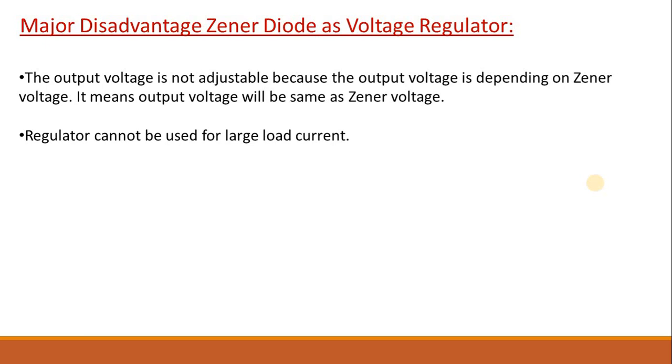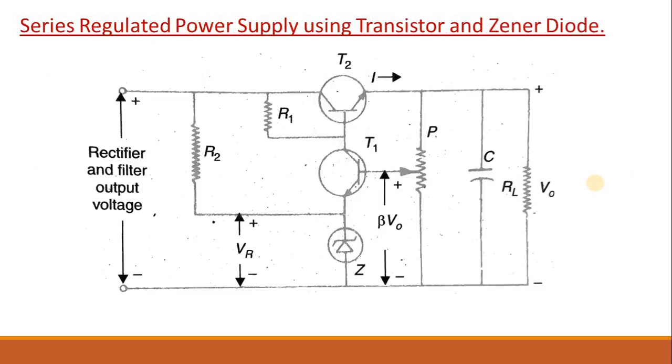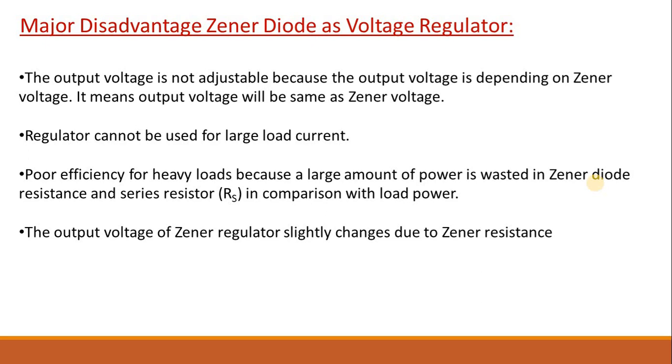Second, regulator cannot be used for large load current. If we increase the load current, then there is large amount of power wastage in Zener resistance as well as series resistance compared to the load power. Also, the output voltage in the voltage regulated circuit will increase slowly with the increase in input voltage because Zener resistance itself changes due to change in current. Apart from these, there are certain more disadvantages like voltage regulation is not much efficient.